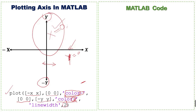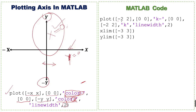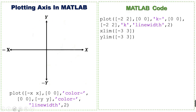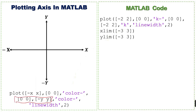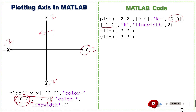Now we write the MATLAB code for these axes. For the x-axis, the limit is from minus 2 to 2, and y is 0. The color of this line is black and it is a solid line. For the y-axis, x is 0 and the limit for y is minus 2 to 2. The color is again black with a solid line, indicated by the minus sign.